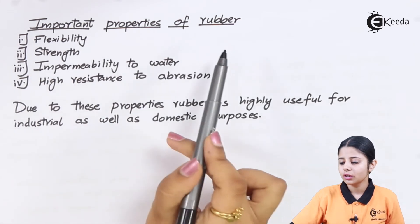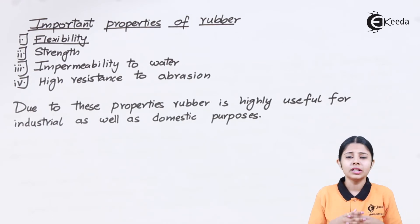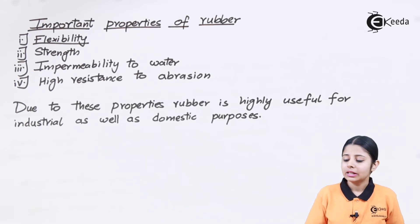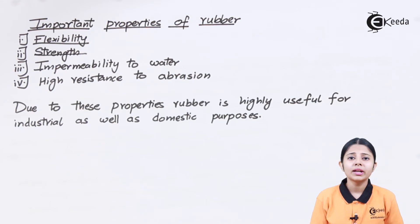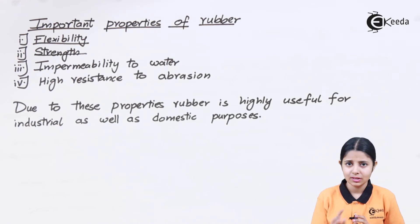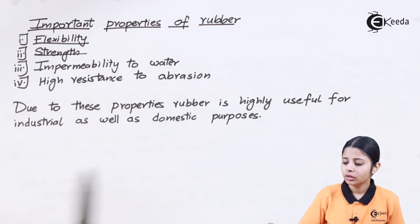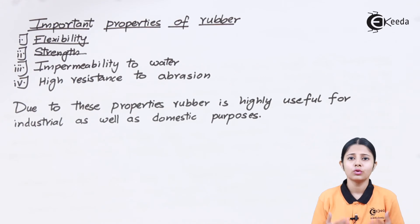The important properties of rubber are: first, flexibility — the property of getting stretched or deformed from its original position. Second, strength — because after stretching, rubber must come back to its original position; if it is weak, it will simply break and never return. Third, impermeability to water. Fourth, high resistance to abrasion. Because of all these properties, rubber is used on a very large scale for domestic as well as industrial purposes.